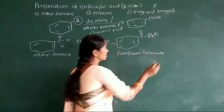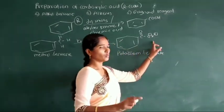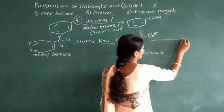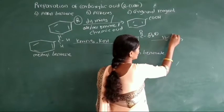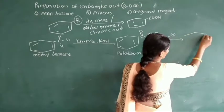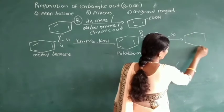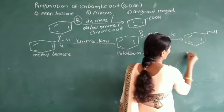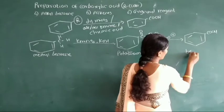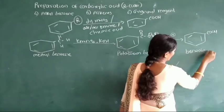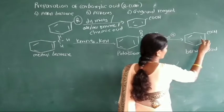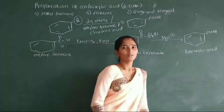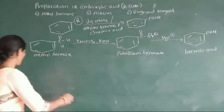It is known as potassium benzoate. This potassium benzoate, on acid hydrolysis in the presence of H3O⁺, this potassium salt of acid is converted into aromatic carboxylic acid. The name of this aromatic carboxylic acid is benzoic acid.